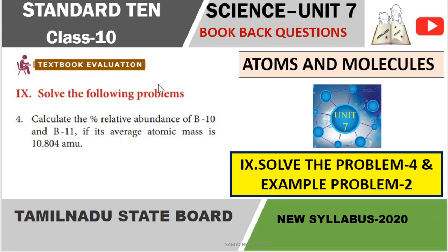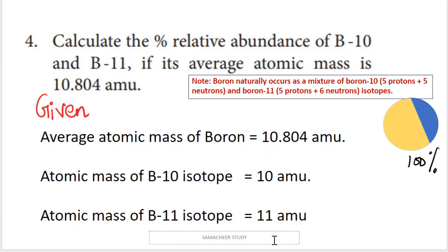Students, this is a percentage relative abundance based problem. It is also example problem number 2. The question is: calculate the percentage relative abundance of B10 and B11 if its average atomic mass is 10.804 amu. B is the boron element with atomic number 5.